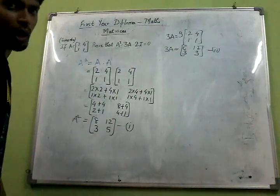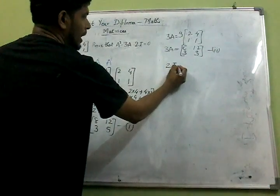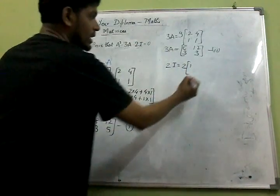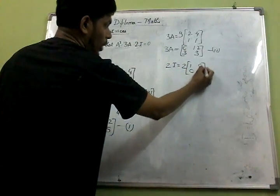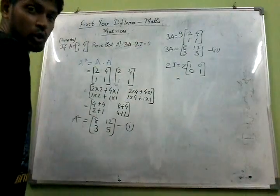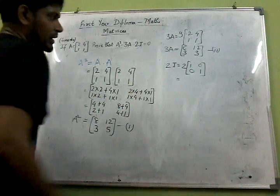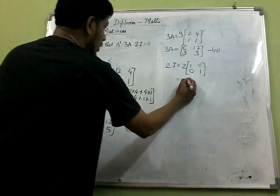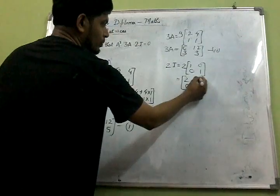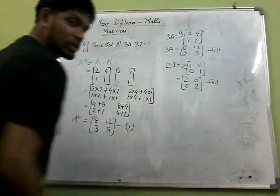Now we need to find 2 into I. So 2I will be equal to 2 into the unit matrix, that is 1, 0, 0, 1. The constant 2 will be multiplied by all the elements of the unit matrix, giving us 2, 0, 0, 2. And this we will mark as point number 3.